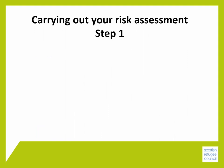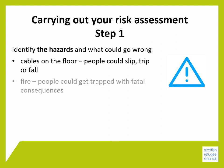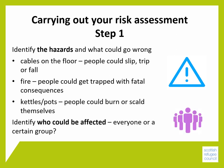The first step of your risk assessment is to identify the hazards and what could go wrong. Examples of this could be cables on the floor — people could slip, trip or fall. Fire — people could get trapped with fatal consequences. Kettles and pots — people could burn or scald themselves. Then identify who could be affected. Many hazards will affect everyone, but some may only apply to a certain group.